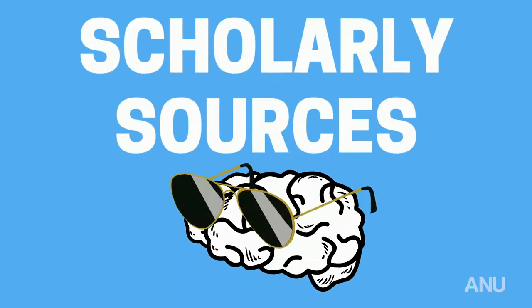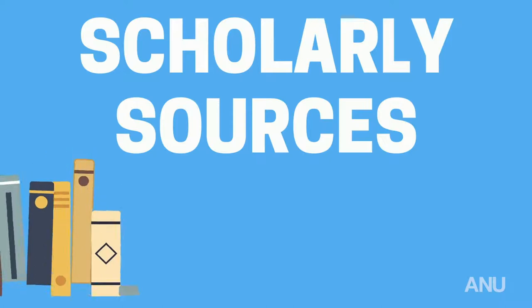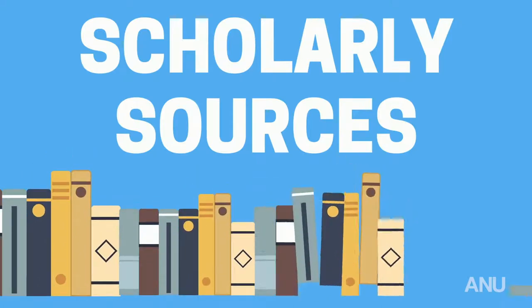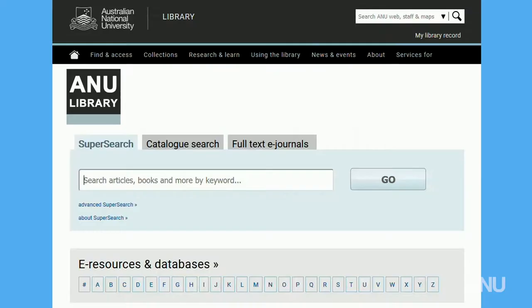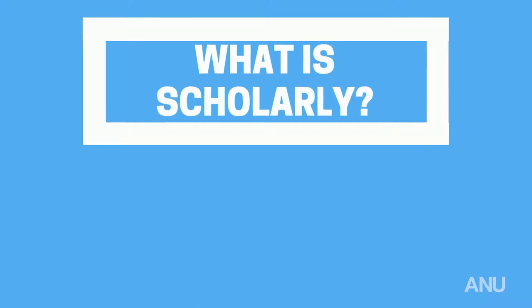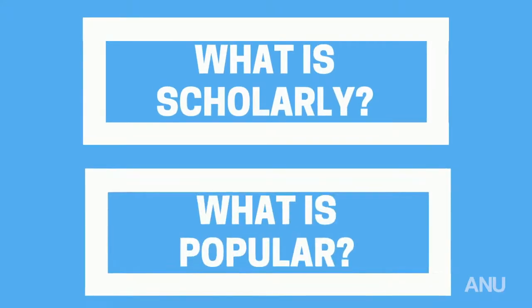Scholarly sources are different. They are typically found only in specialized publications, such as academic journals and books. And generally, you access these through libraries and online databases. So how do you work out what is scholarly and what is popular, so you're citing the right kinds of sources in your research?